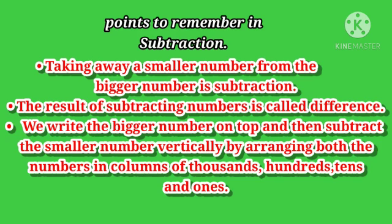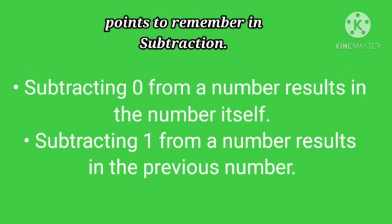Points to remember in subtraction. Taking away a smaller number from the bigger number is subtraction. The result of subtraction is called difference. We write the bigger number on top and then subtract the smaller number vertically by arranging both numbers in columns of thousands, hundreds, tens and ones. Subtracting 0 from a number results in the number itself. Subtracting 1 from a number results in the previous number. This you have to keep in mind.